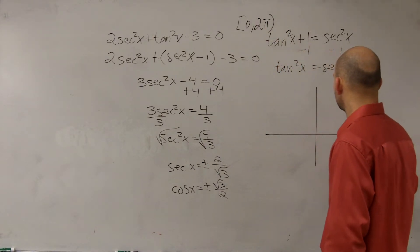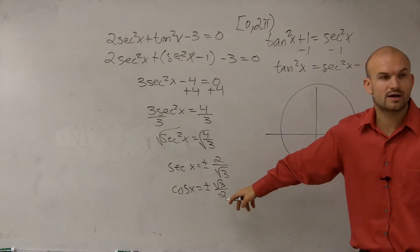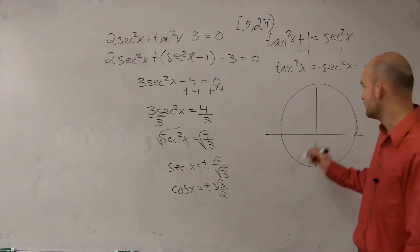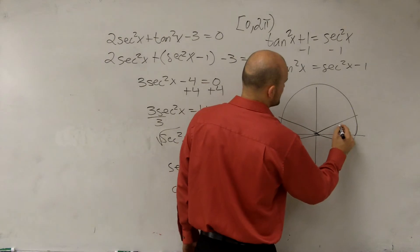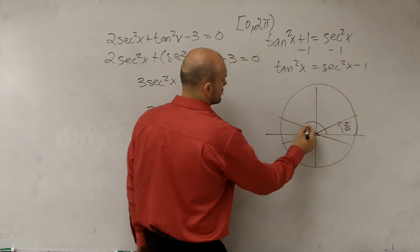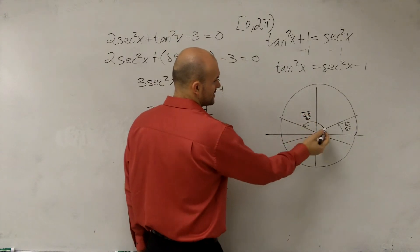So now, all I'm going to do is simply create my right triangle and determine what are all the values when I'm going to have an x value of square root of 3 over 2. So my first angle is going to be pi over 6. Next angle would be 5 pi over 6.